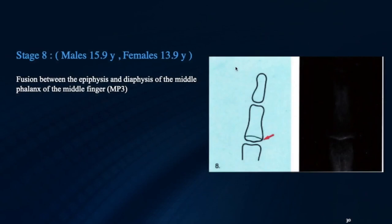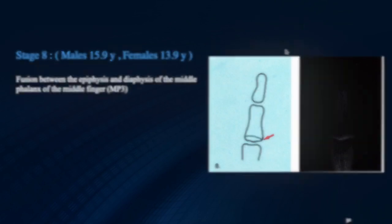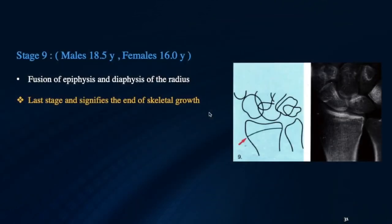In Stage 8, there is fusion between the epiphysis and diaphysis of the middle phalanx of the middle finger, denoted as MP3. In Stage 9, the final stage, there is end of skeletal growth with the fusion of the epiphysis and diaphysis of the radius. In females, this occurs around 16 years of age, and in males around 18 and a half years of age.